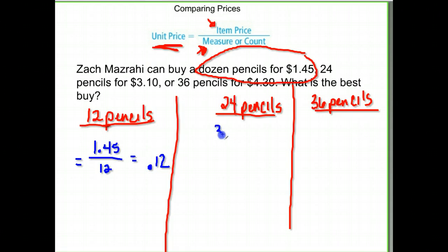24 pencils, their price was $3.10, and there are 24 of them. So we do $3.10 divided by 24. That is 13 cents. You get 0.129, which rounds up to 0.13 cents.